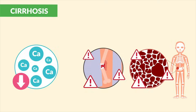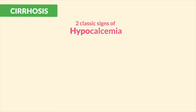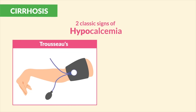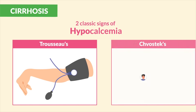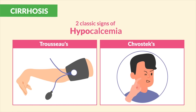The two classic signs of hypocalcemia (low calcium) are Trousseau's sign — an arm twitch with a blood pressure cuff on — and Chvostek's sign — a facial muscle twitch when you stroke the side of the cheek.